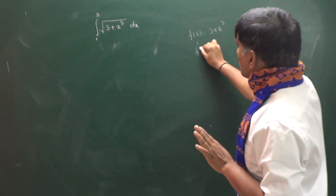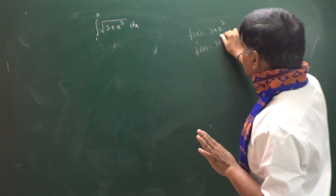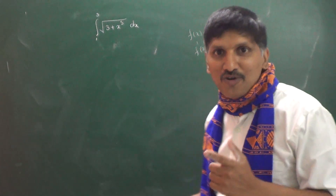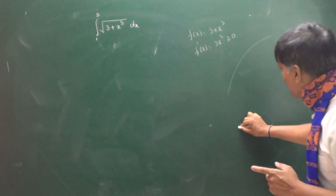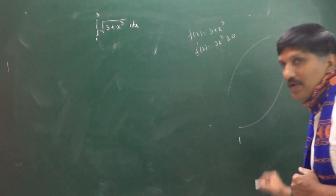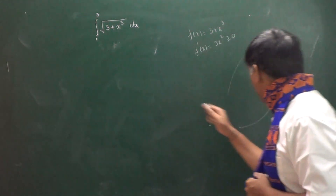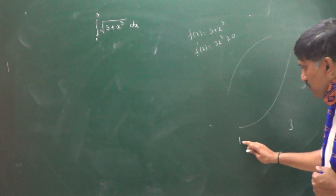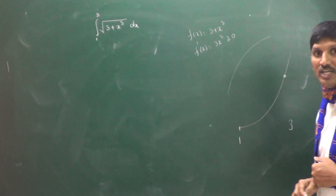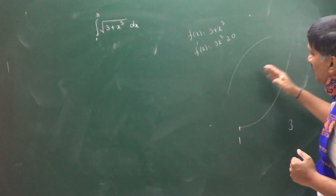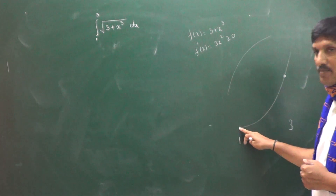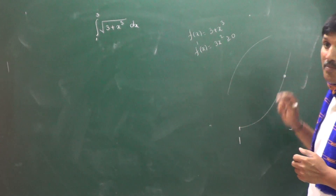The differentiation f'(x) = 3x², which is ≥ 0, so f(x) is an increasing function. Since the lower limit is 1 and upper limit is 3, the function has a minimum at x = 1 and a maximum at x = 3. Therefore √(3 + x³) is also an increasing function, with minimum at x = 1 and maximum at x = 3.